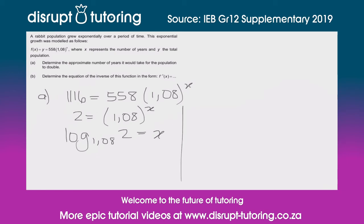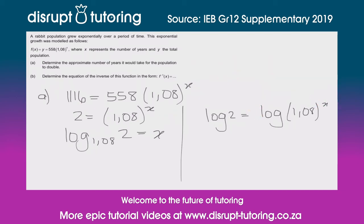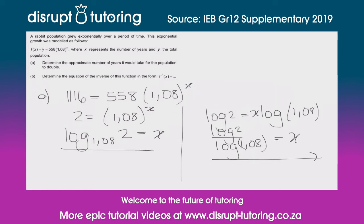If you don't remember the log definition, there is always a way around it. What I like to do is log both sides — log 2 = log(1.08^x). By the law of logs, I can bring the exponent down in front, giving x·log(1.08) = log 2, and therefore x = log 2 / log 1.08.